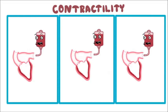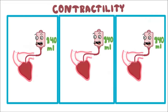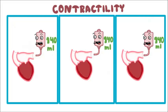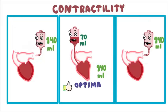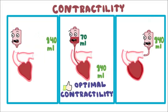Each of these three hearts are filled with 140 mL of blood — in other words, all three hearts have the same preload. When the heart in the middle contracts, suppose it pumps 70 mL out of 140 mL, and we say it is a result of optimal contractility under resting conditions. When the first heart contracts, suppose it pumps only 40 mL out of 140 mL. Having the same preload as the second heart, it pumps less blood — this is because of decreased contractility.